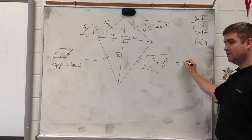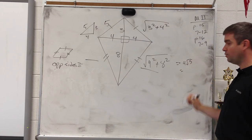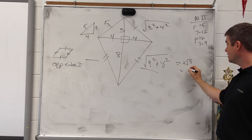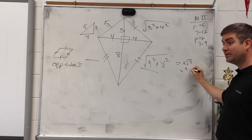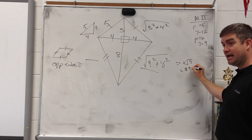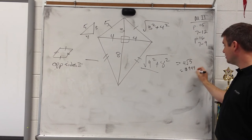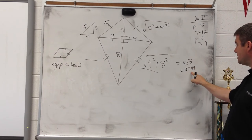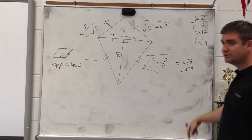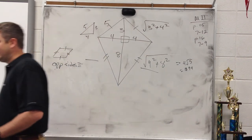The answer is 4 root 5, and rounded like money that would be 8.94. That's all you have to do.